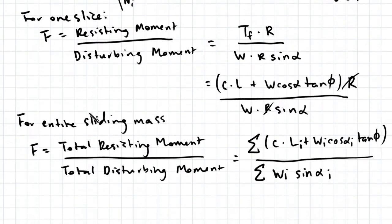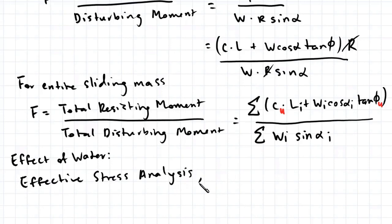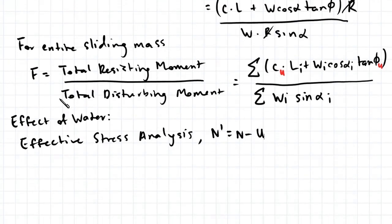If we're carrying out a total stress analysis, these parameters here are undrained: cohesion and angle of friction. To consider the effect of water, if there's a water table within the soil element, we then use an effective stress analysis. This means we need to use the effective normal force, which is equal to the total normal force minus the pore water pressure force. As a result, this modifies our factor of safety expression. This W cosine alpha here corresponds to the total normal force, so we need to change that.